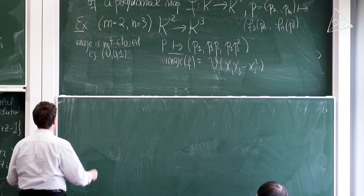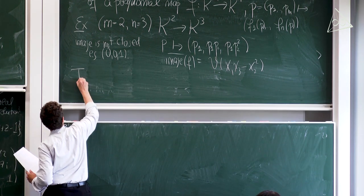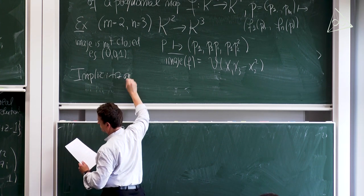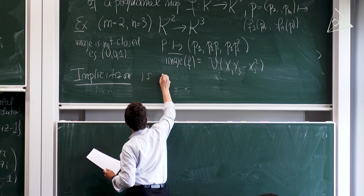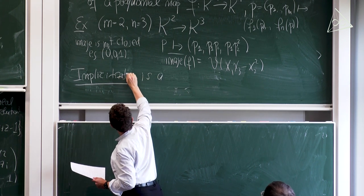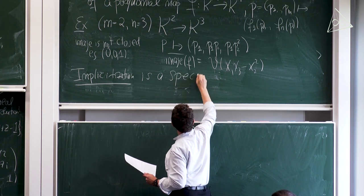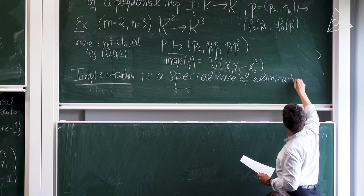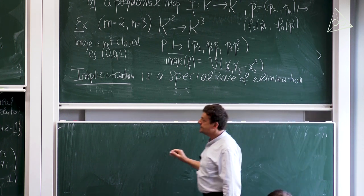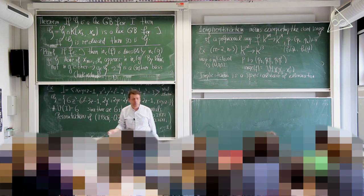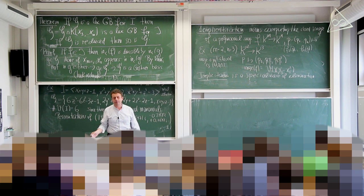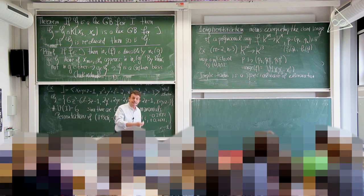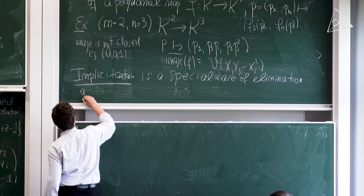Implicitization is a special case of elimination. This works in every category — linear spaces, polytopes, topological spaces, manifolds. Projection is elimination; implicitization is a special case thereof, because the graph of f is a variety, and it's actually closed in kᵐ⁺ⁿ.